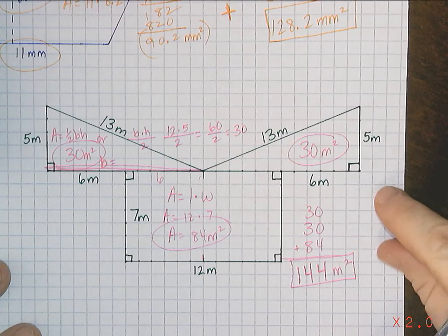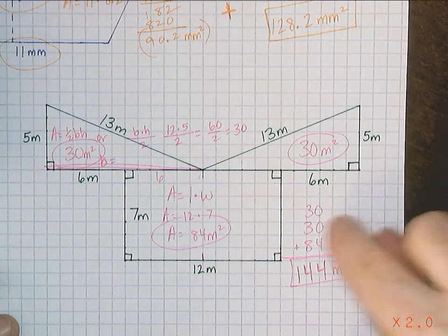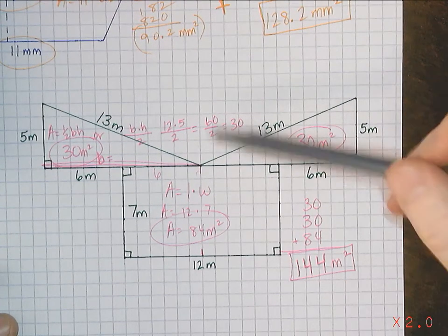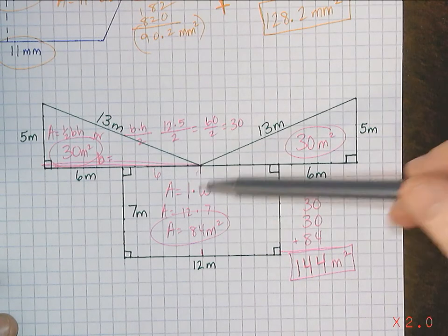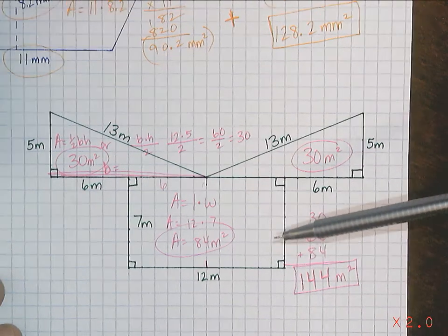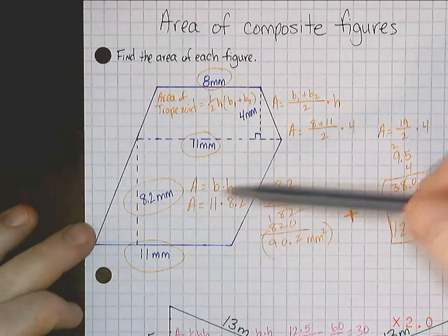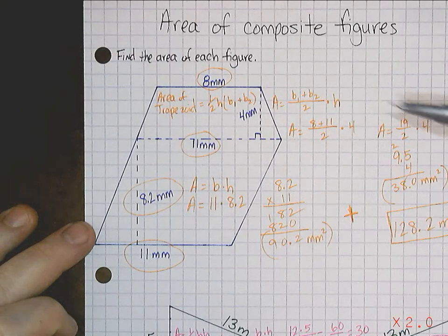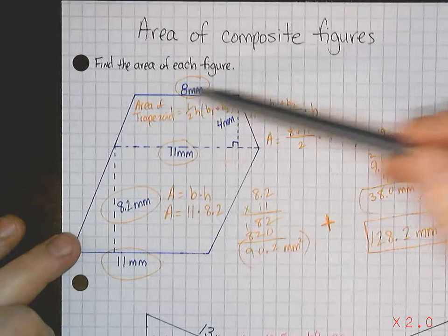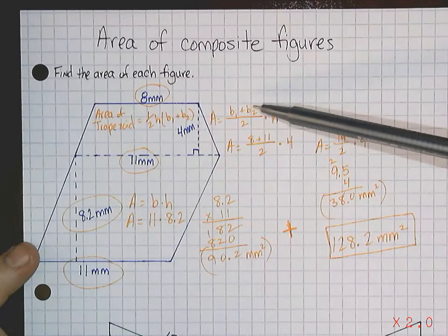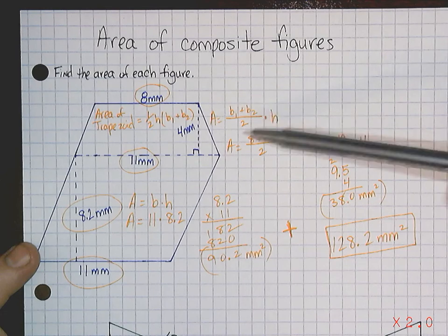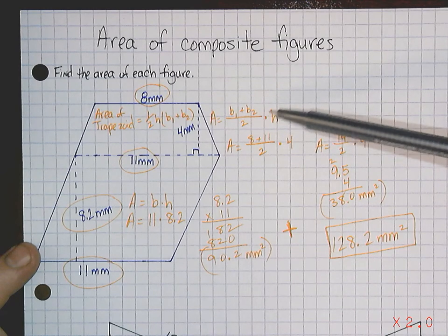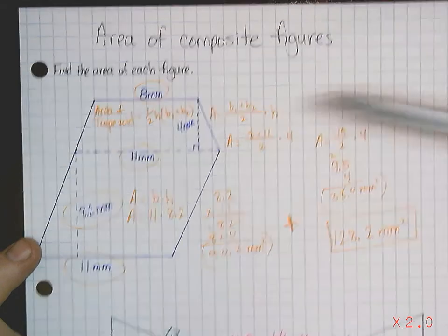So again, know your formulas. Make sure you know how to find the area of a triangle: base times height divided by 2. Area of a rectangle: length times width, or base times height, same thing. Area of a parallelogram: base times height. Area of a trapezoid: base 1 plus base 2, divide by 2 to find the average base, times it by the height.